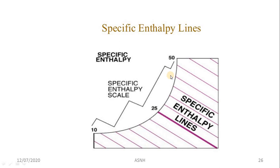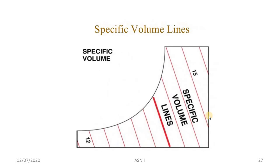The specific enthalpy lines are equidistant inclined lines starting from the saturation line, similar in direction to the wet bulb temperature lines. The specific volume lines are also inclined lines, connecting from the dry bulb temperature axis up to the saturation line.